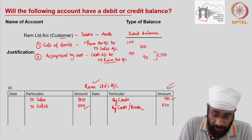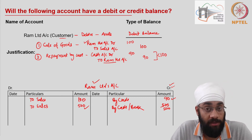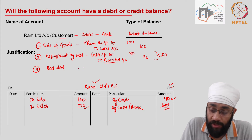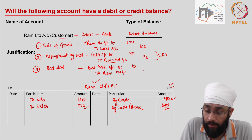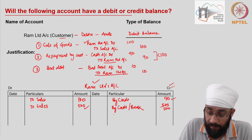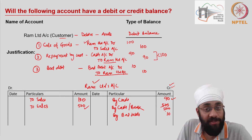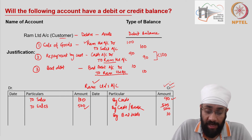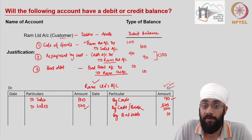Now let's say the customer does not pay you 500 and 10 — the customer only pays 500 and says he can't pay the remaining 10. It becomes a bad debt. When there is a bad debt, the journal entry is: bad debt account debit to Ram Limited's account. You go to the credit side of Ram Limited's account and write 'by bad debts' for 10. Again, there is zero balance, but you can never have the total of the credit side going higher than the total of the debit side. A debtor's account will always have a debit balance, or at best no balance.